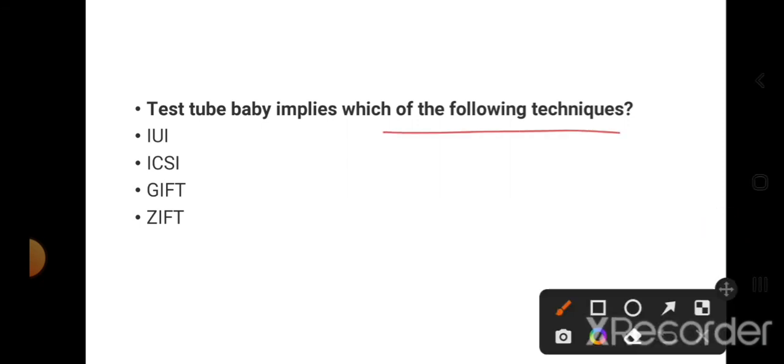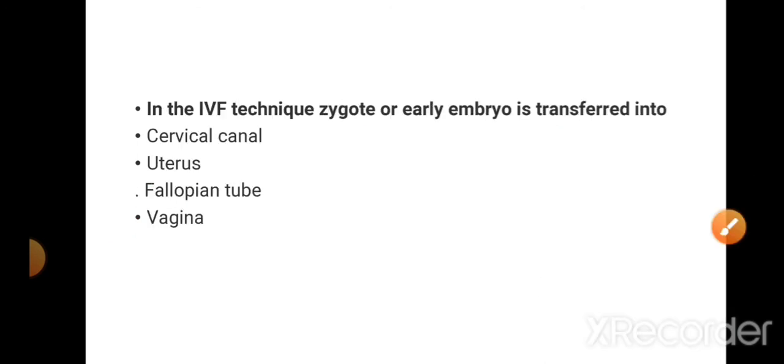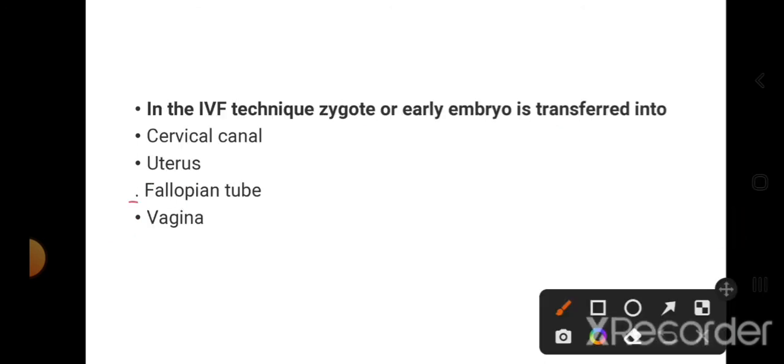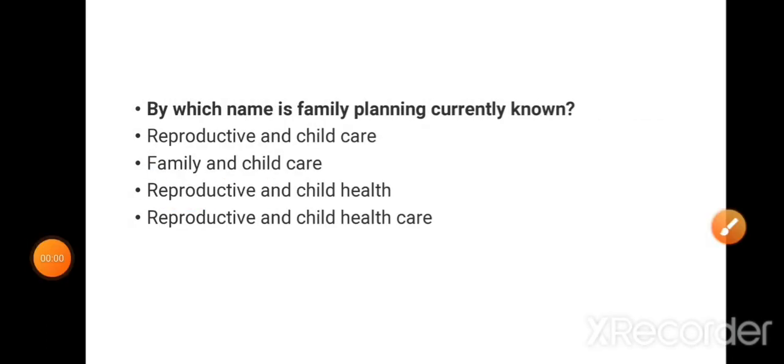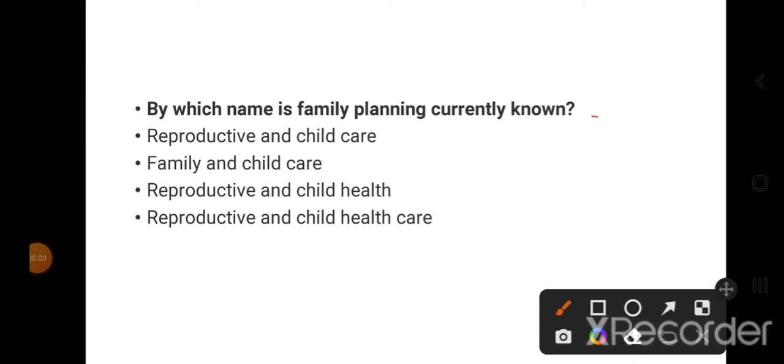Test tube baby implies which of the following techniques? ZIFT is the right answer. In IVF techniques, zygote or early embryo is transferred into - where is it transferred? Fallopian tube, up to the 8th cell. Remember this: more than 8th cell, then it can be implanted into the uterus. By which name is family planning currently known? Reproductive and child health. Reproductive and child health care. So this is the right option.